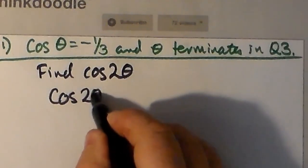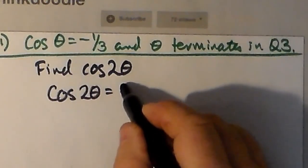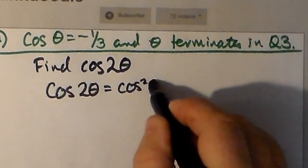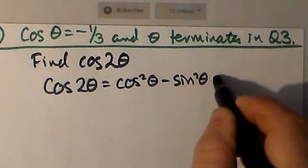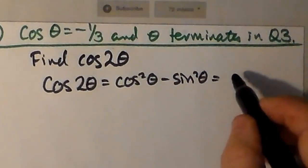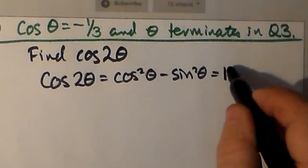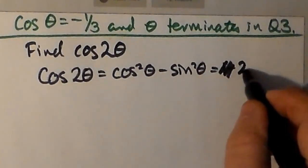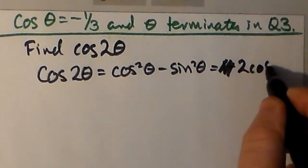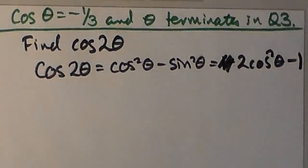The first and probably the easiest thing to do in these sorts of questions is to find cos 2θ first, because there's a variety of ways of finding it. You know that cos 2θ is cos²θ minus sin²θ, which can also be taken to be 2cos²θ minus 1.